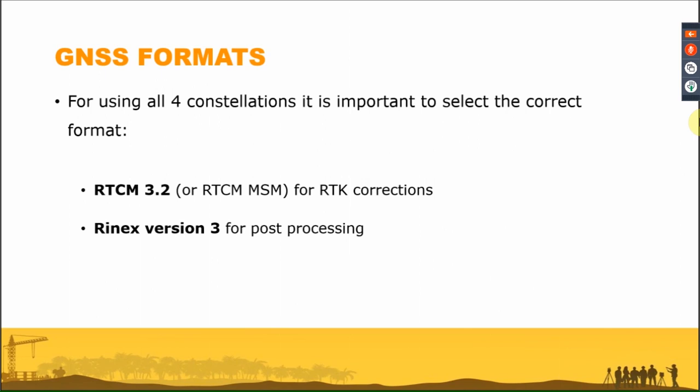Did you compare GPS plus GLONASS performance with GPS, GLONASS, Beidou, and Galileo under trees or in urban canyons? Not directly, but we have customers and dealers who have already compared this. Generally, if you work with GPS, Beidou, and Galileo you receive better accuracy both in elevation and horizontally. Using Galileo and Beidou constellations also improves accuracy and the speed of fix initialization, because you receive more satellites.